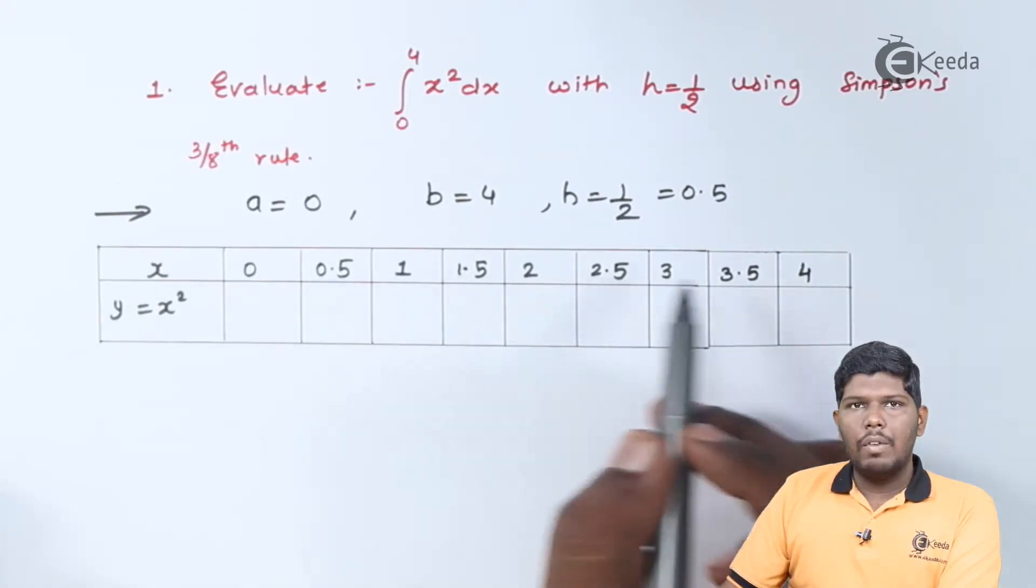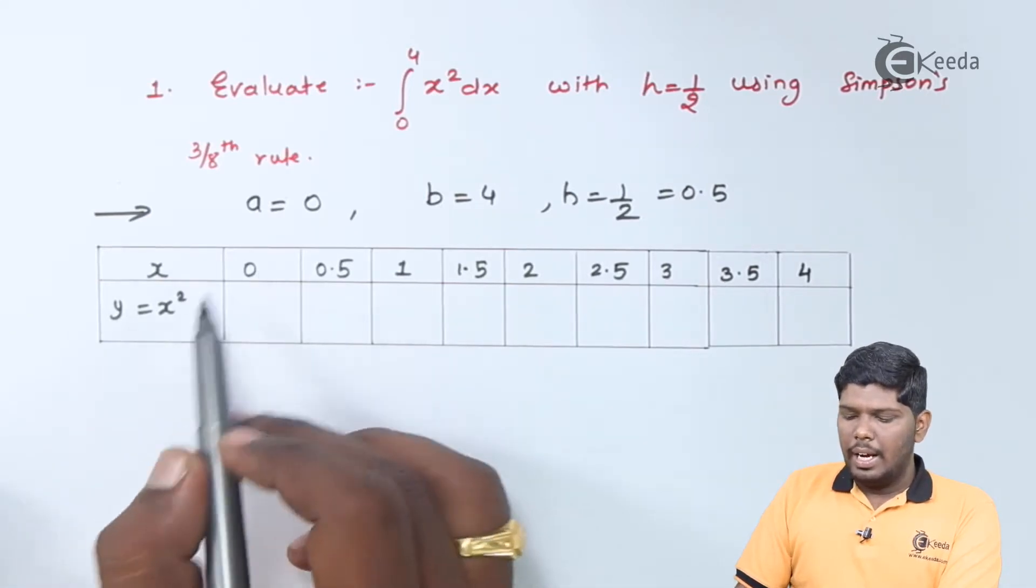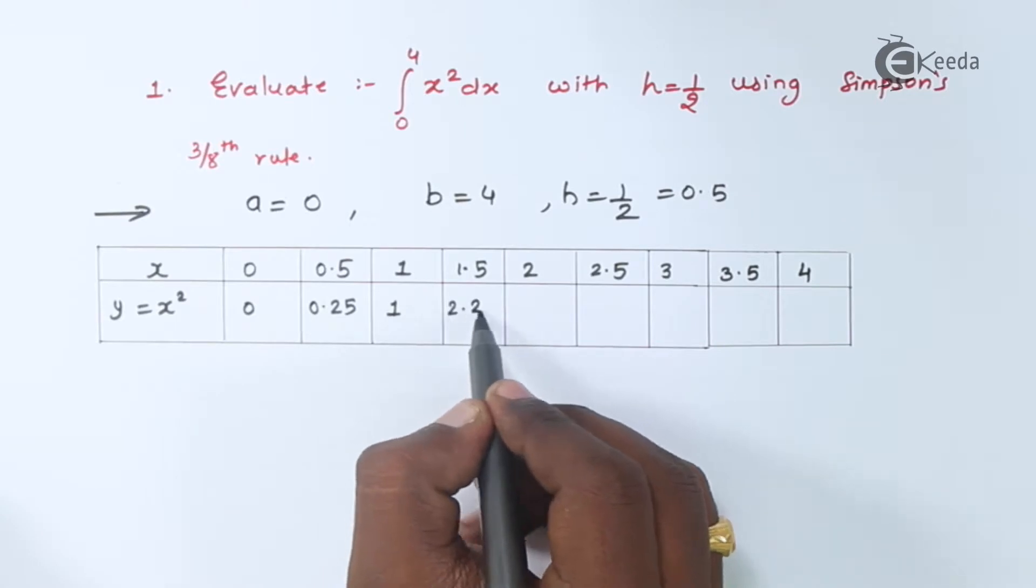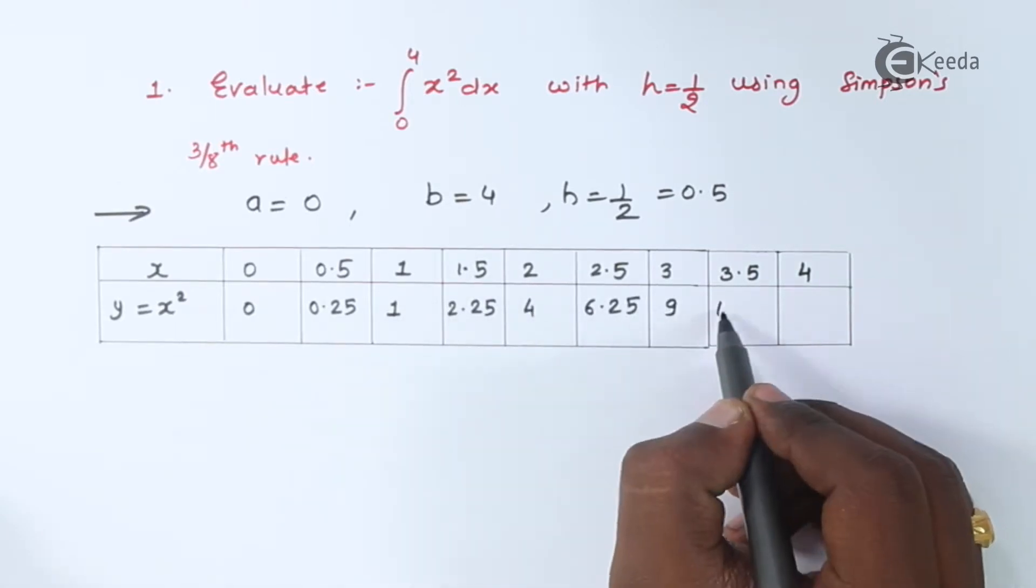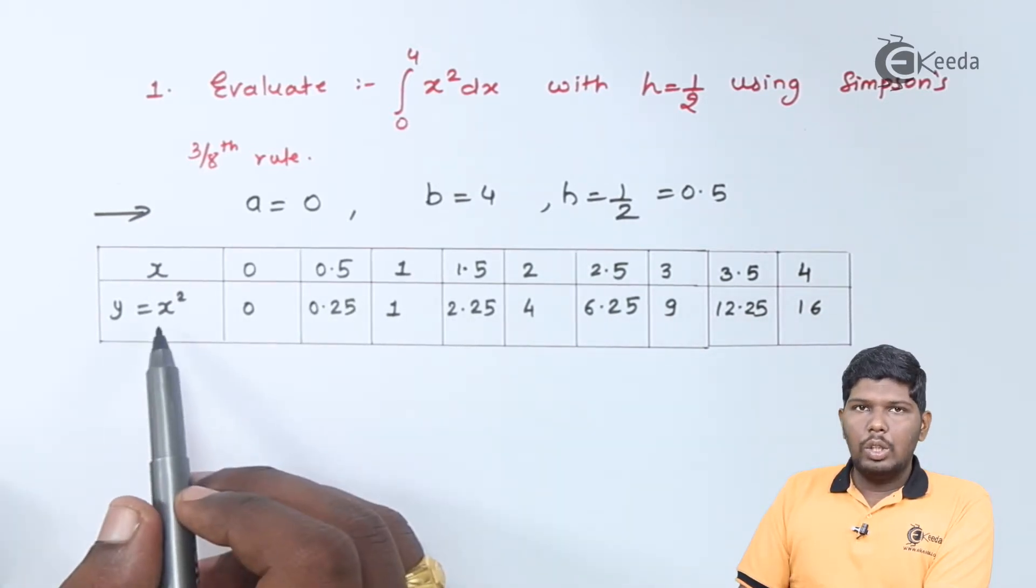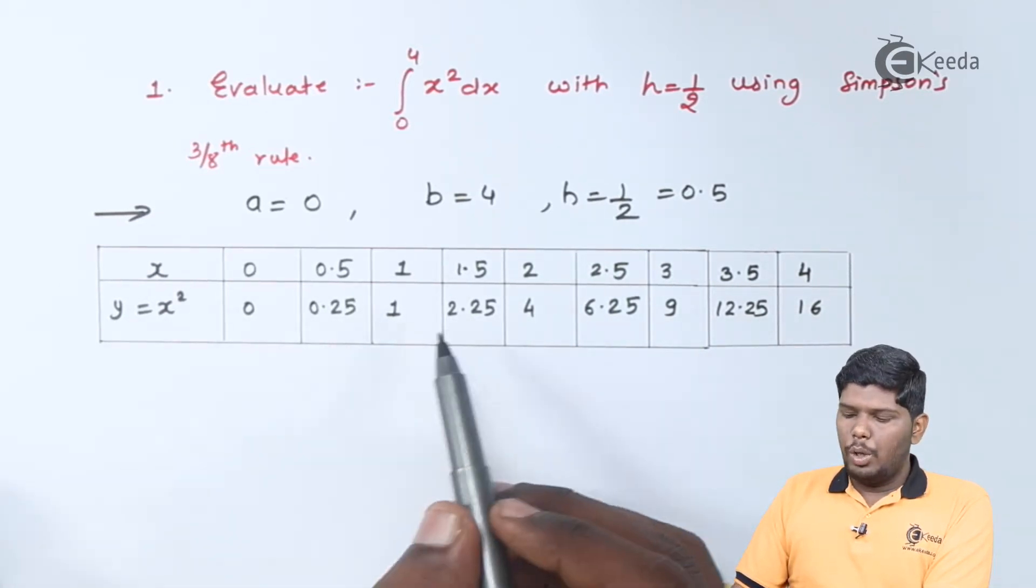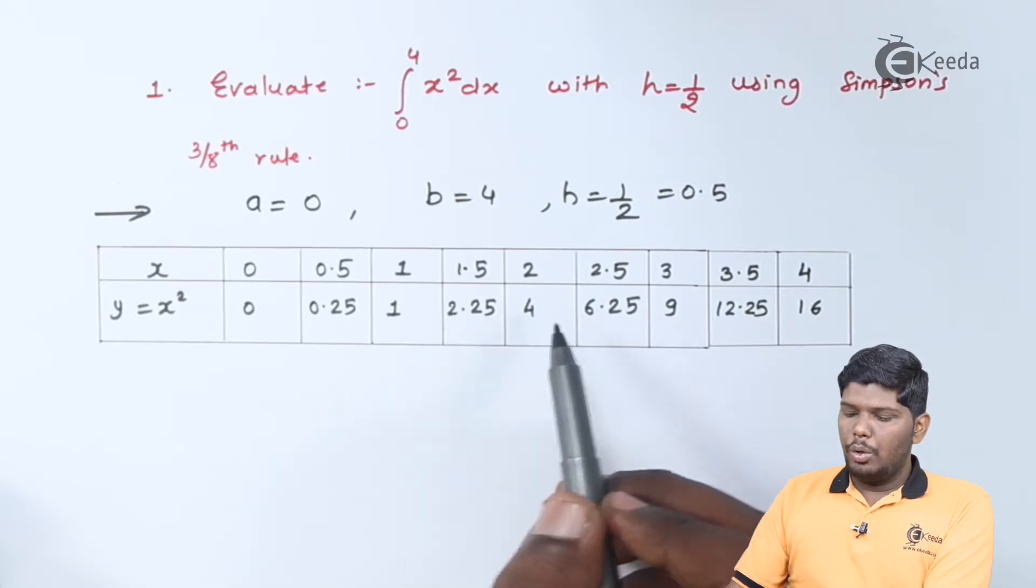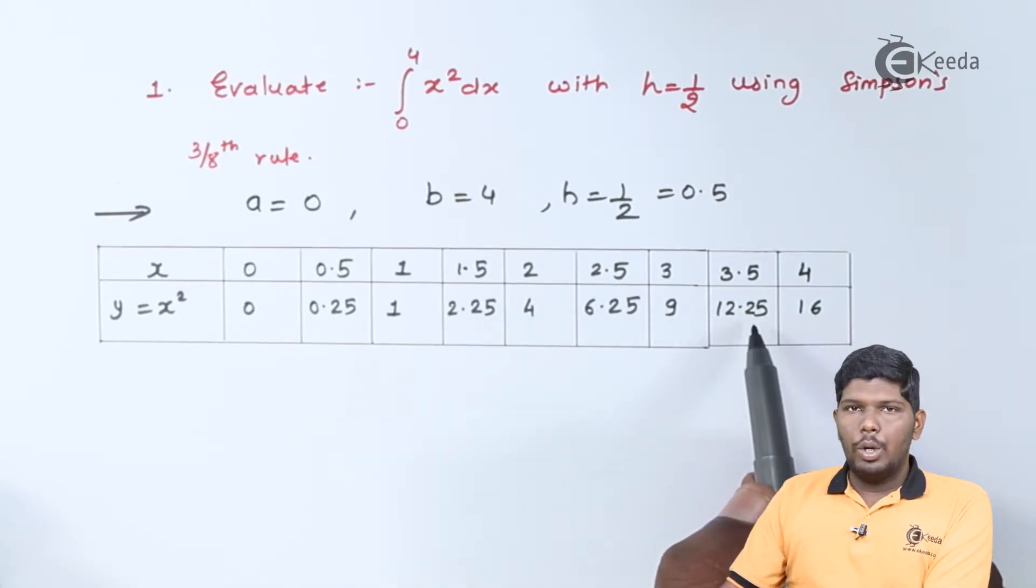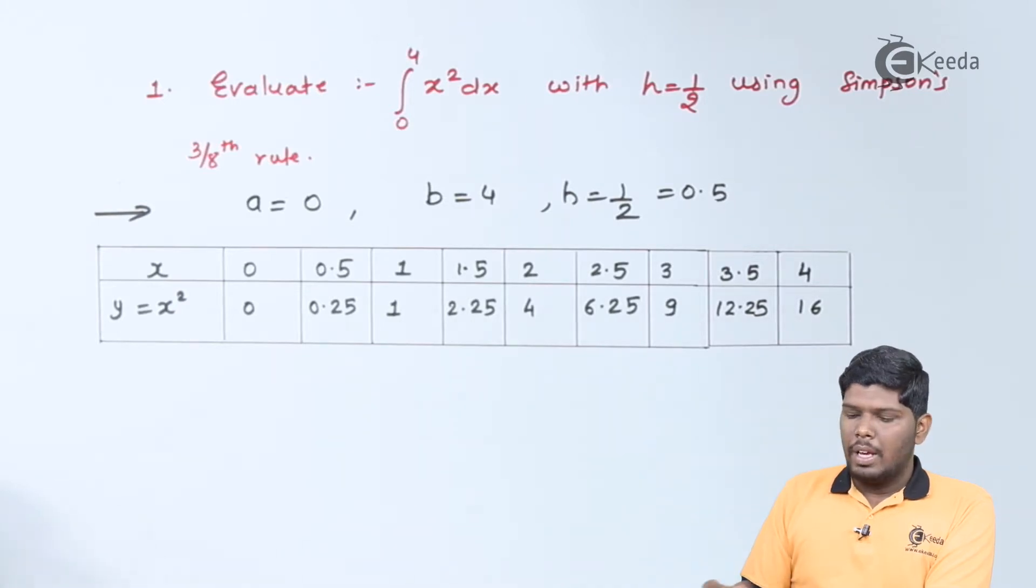Now, let us substitute the values of x in x squared and get the value of y. After substituting the values of x, the values of x squared are 0, 0.25, 1, 2.25, 4, 6.25, 9, 12.25, and the last value is 16.